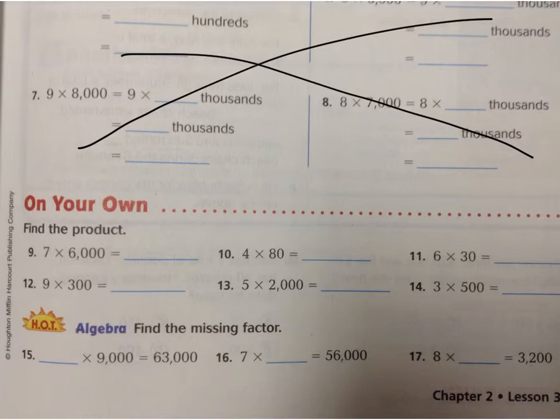Once again, we're going to scratch out our zeros here. Do 7 times 6, which is 42. And since there were three zeros, you put three zeros onto the end.